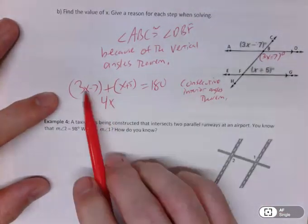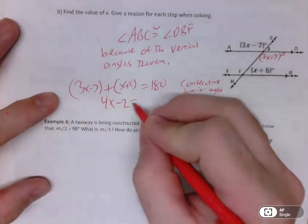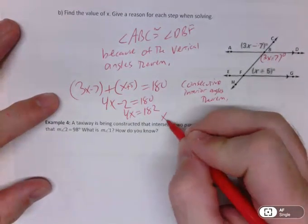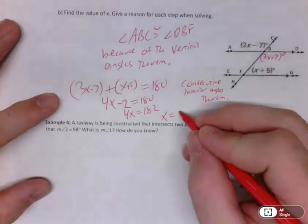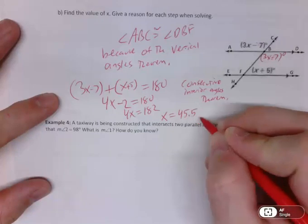4x, right? 3x and x is 4x. Negative 7 and 5 is negative 2. So minus 2 equals 180. 4x then equals 182. So then x has to be, what's that become? 45.5.